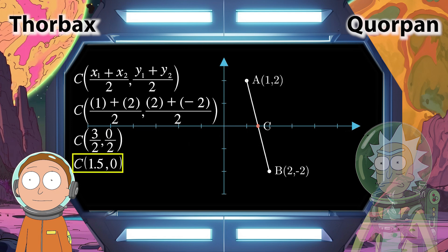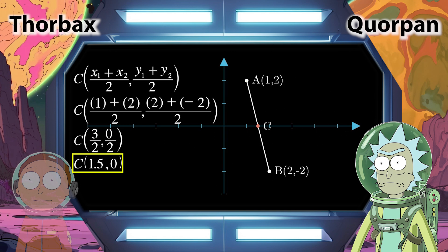then the midpoint equals the coordinate point 1.5 comma 0. Good job, Morty. Now let's go save summer and, you know, the entire fabric of reality.